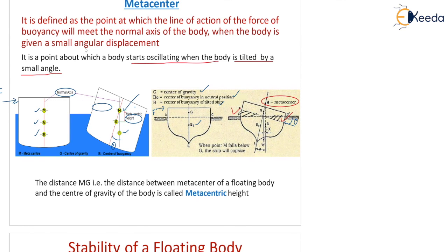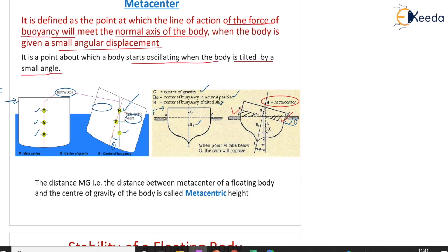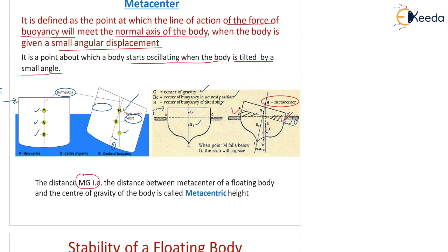So the definition of metacenter: it is the point at which the line of action of the force of buoyancy will meet the normal axis of the body when the body is given a small angular displacement. Metacentric height is the distance MG — the vertical distance between the metacenter M and the center of gravity G of a floating body. We do not have any numerical for metacentric height — it is just a concept to understand the stability of floating and immersed bodies.